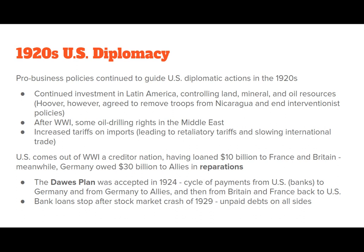The U.S. came out of World War I as a creditor nation, having loaned $10 billion to France and Britain during the war. Meanwhile, Germany owed $30 billion to the Allies in reparation payments. The Dawes Plan, established and accepted in 1924, created a cycle of payments: U.S. bank loans went to Germany, Germany used those loans to pay back the Allies, and then Britain and France would use that money to pay back the United States. Those bank loans stopped after the stock market crash of 1929, leaving unpaid debts on all sides.